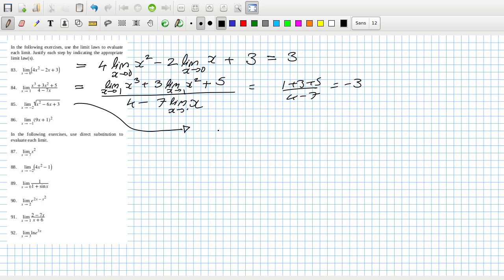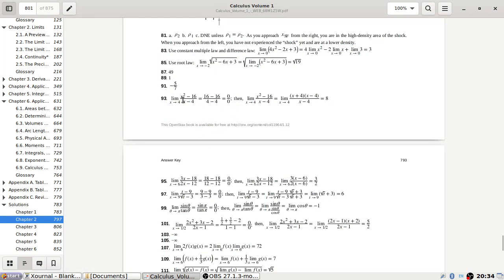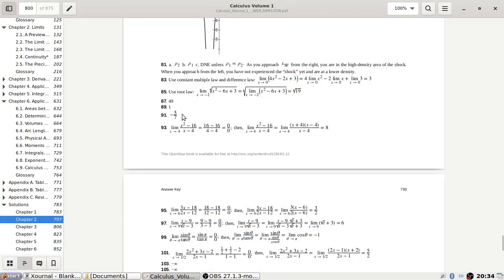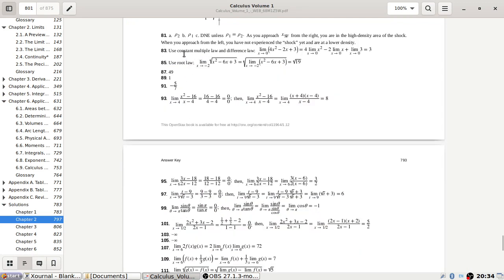The next one here, that's root the limit as x goes to minus 2 of that. I could add using the constant rule plus the constant rule plus the one, all squared, so that's 64. So where was I? 83, yeah. And 85, yeah.